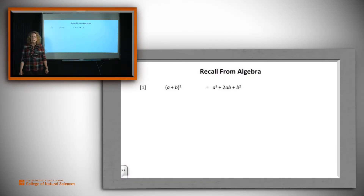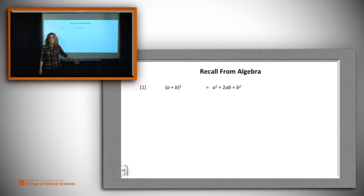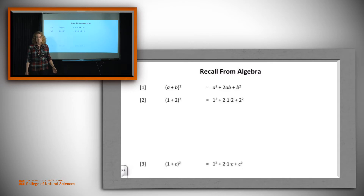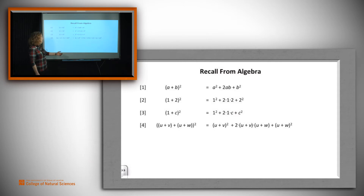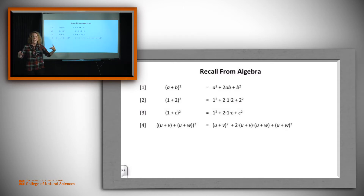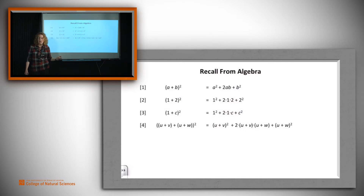Recall from algebra that we write claims like this: (a + b)² is equal to a² + 2ab + b². When we say something like that, we don't mean it's only true of a and b. We could say that it's equally true of 1 and 2, or 1 and c, or more complex expressions — like (u + v + u + w), the quantity squared. We write it out in exactly the same way on the right-hand side. So we know that when we write a claim like this, it applies generally to any value substituted for the variables a and b.